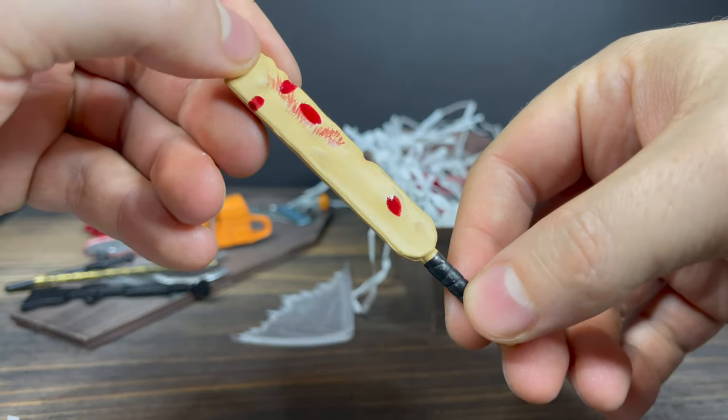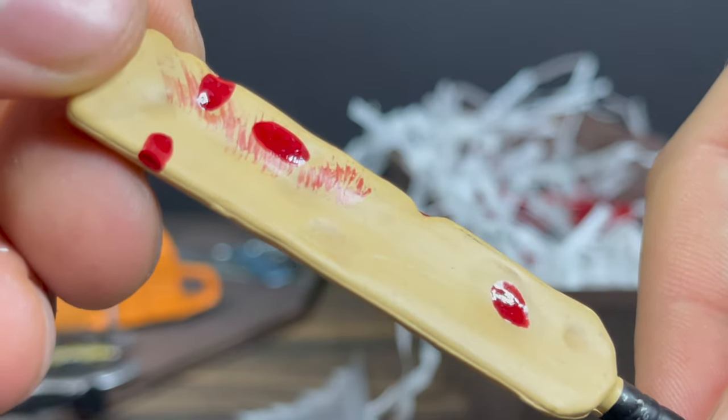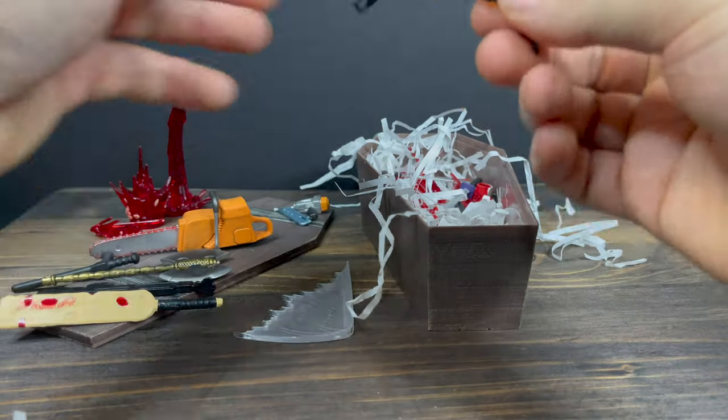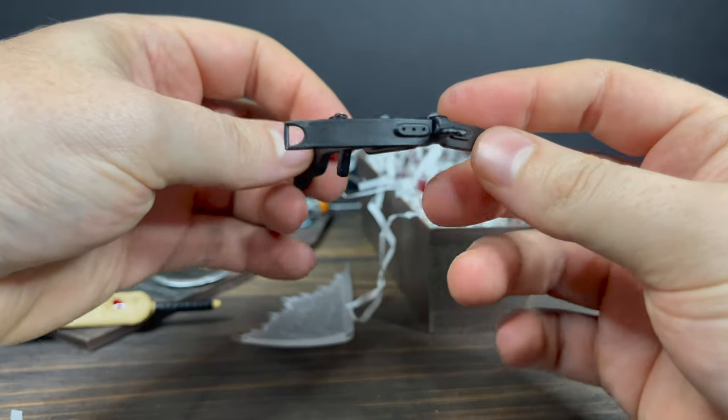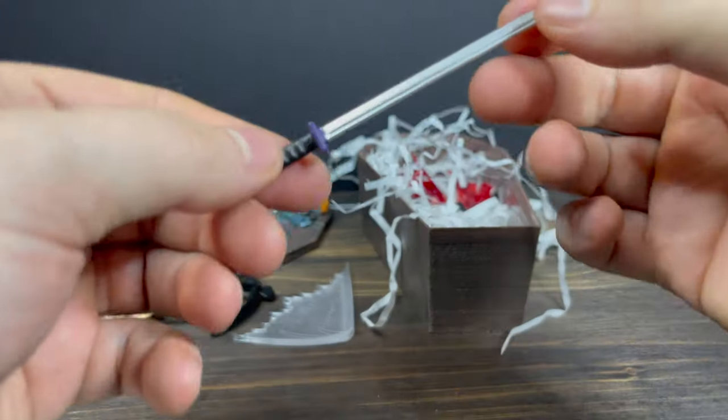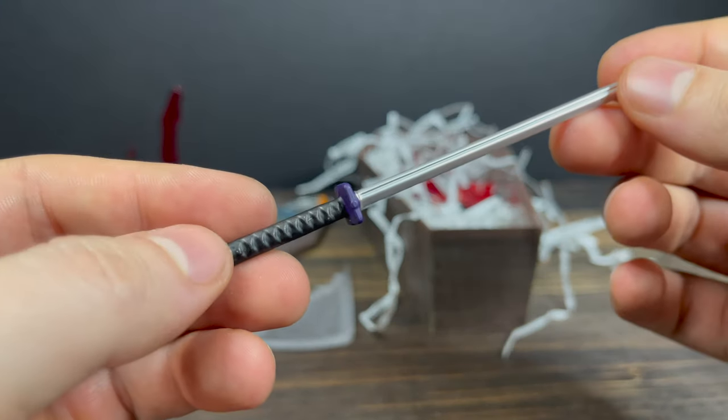When you're done with the nail gun, you got a big paddle right here, or maybe it's a cricket bat. Either which way, it's got some blood all over it. I like what they did with the blood - it looks wet. Nicely done there, nice effects. So you take your crossbow and this kind of just pieces together much like the chainsaw.